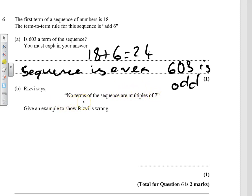example to show Rivi is wrong. Well, if we do 6 times 7, it's going to be a multiple of seven and a multiple of six, which is 42. So therefore, that's an example that it is wrong.